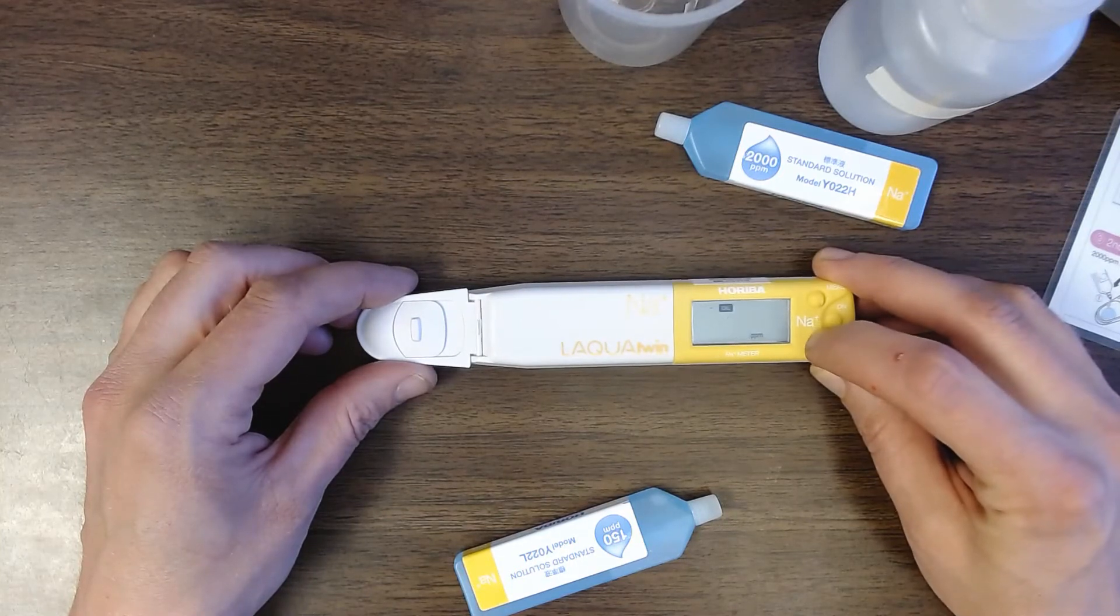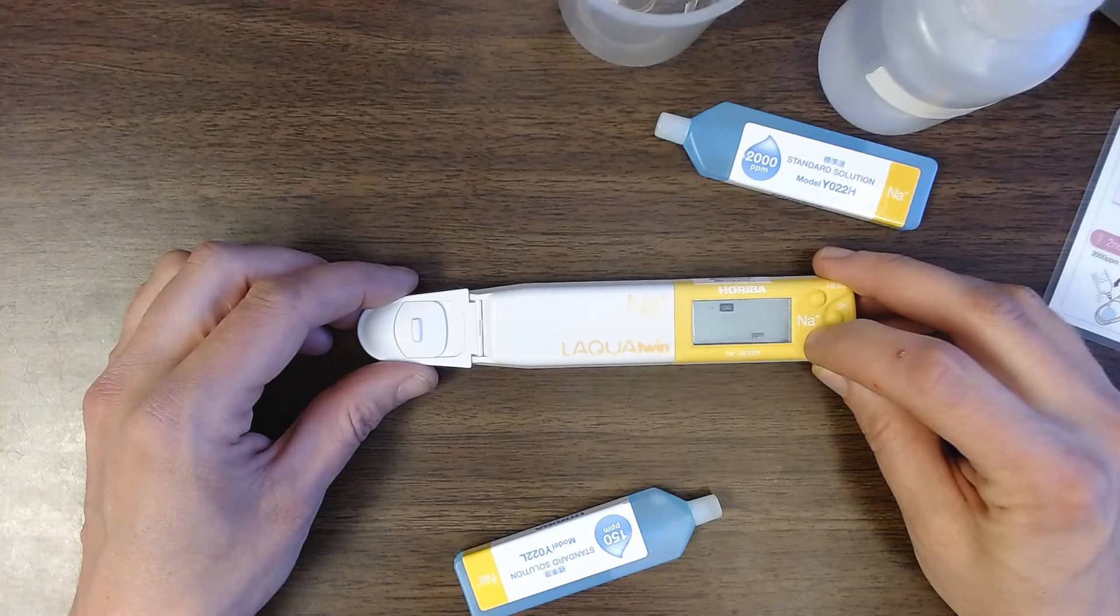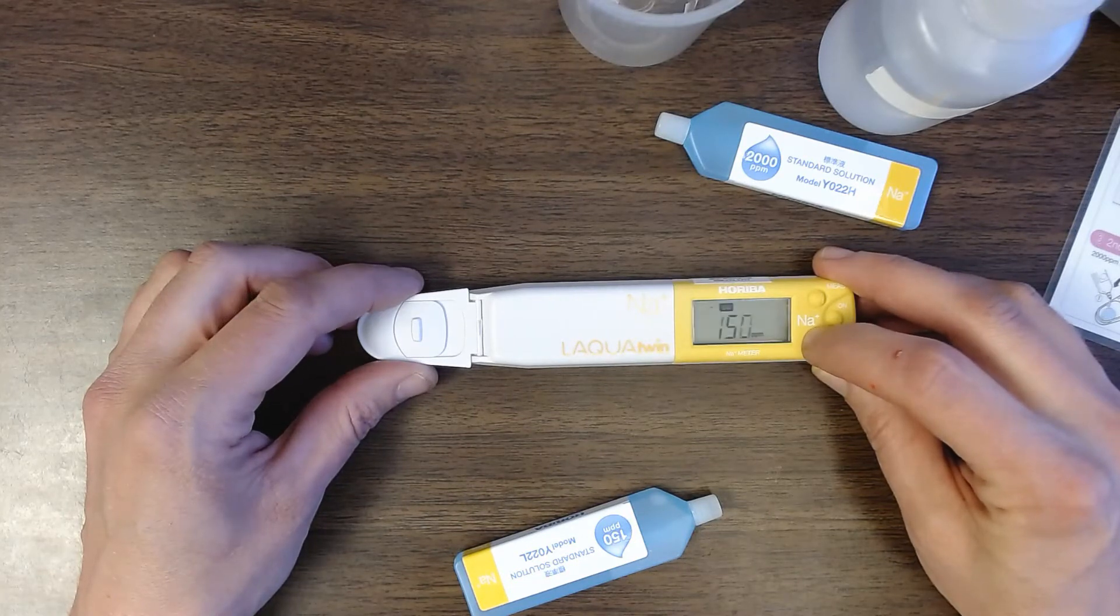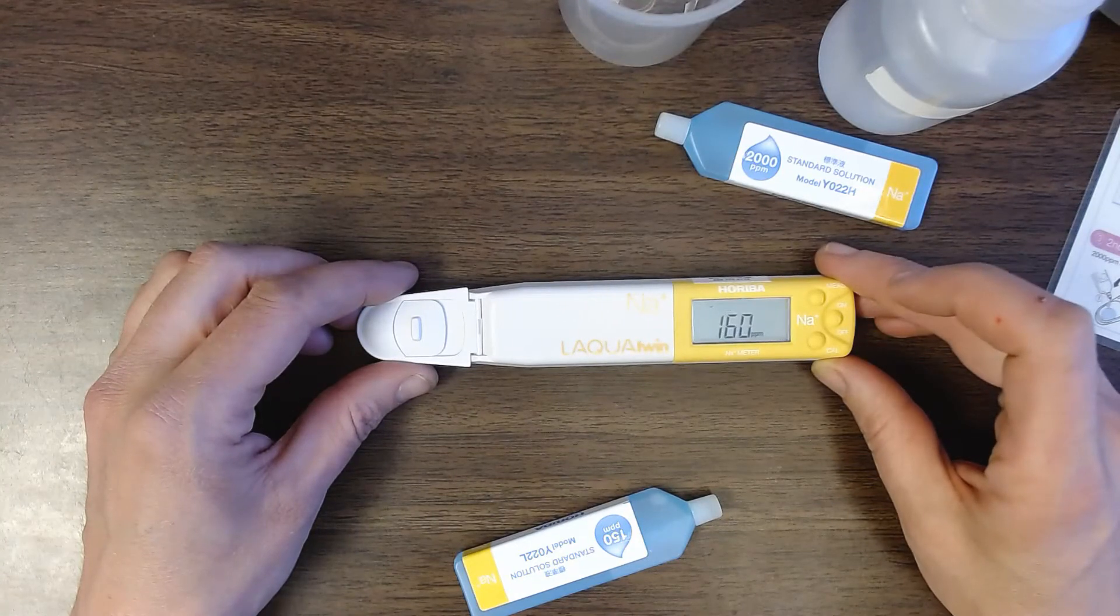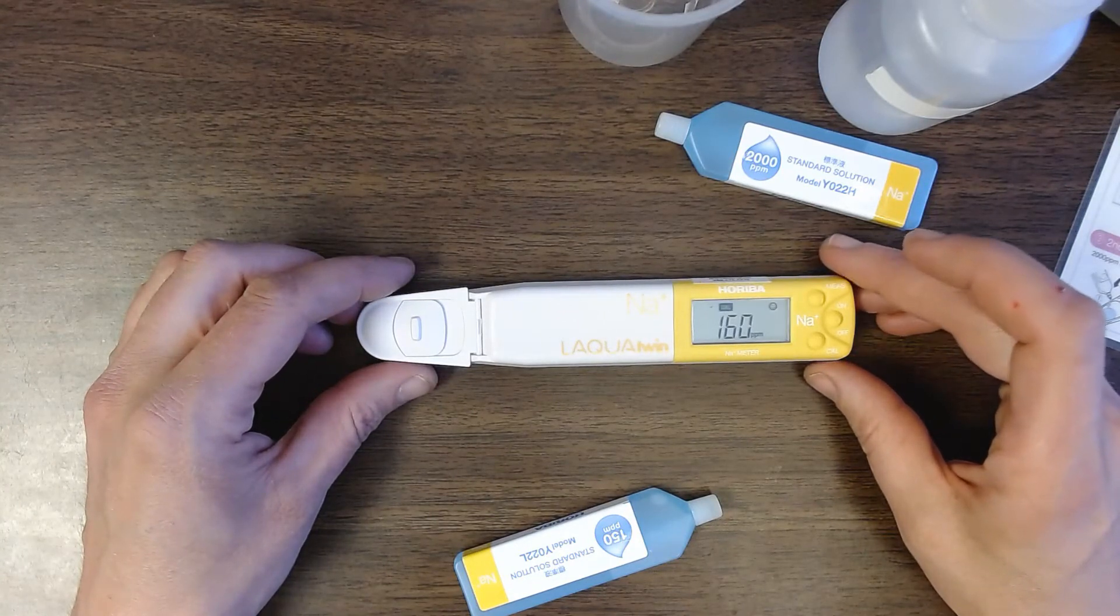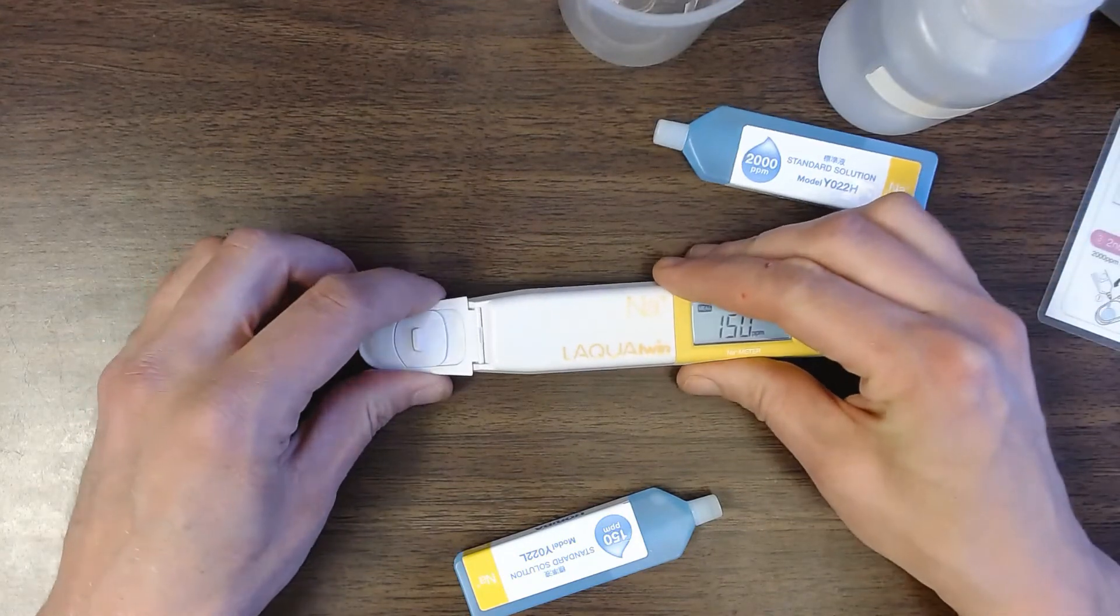So I'm going to press the cal button. And it's going to ask are you meaning to calibrate at 150 parts per million? And I am. So I'm going to press cal again. A little bit longer. And then it's going to show me a happy face to show okay now it's calibrated at 150 parts per million.